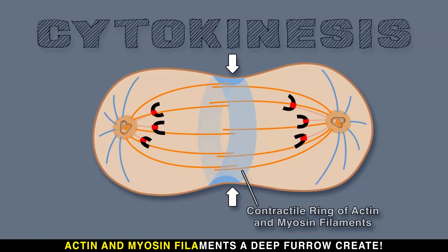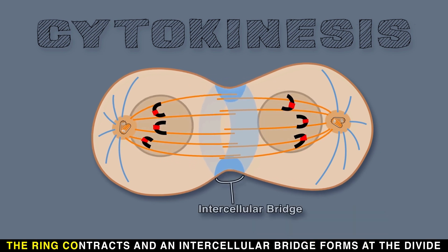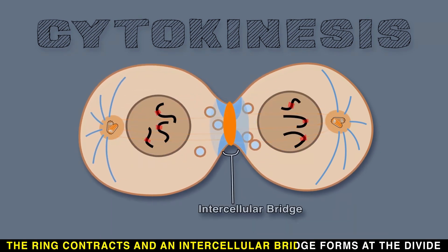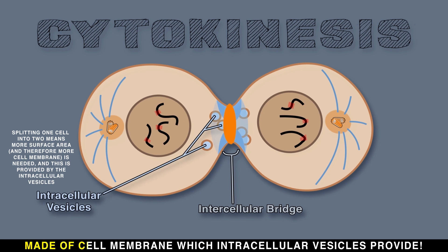Actin and myosin filaments create a deep furrow. This contractile ring is what gets cells to separate. The ring contracts and an intercellular bridge forms at the divide, made of cell membrane which intracellular vesicles provide.